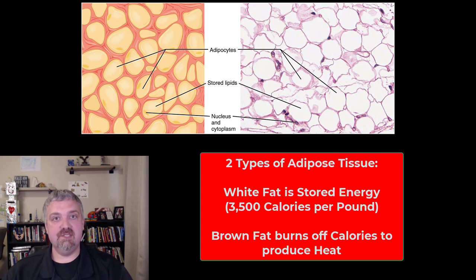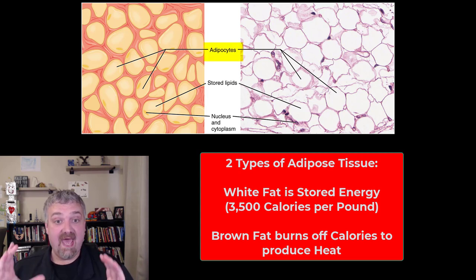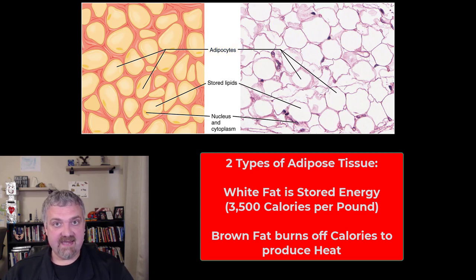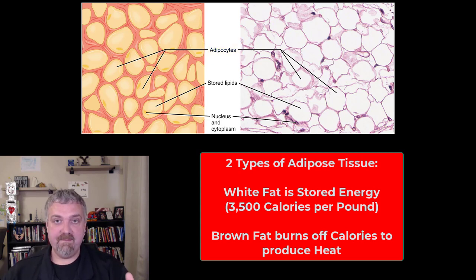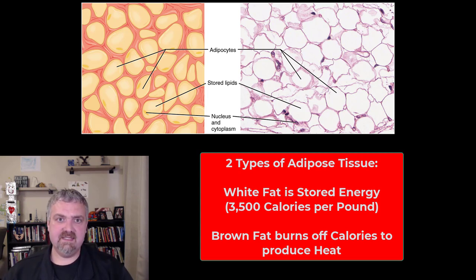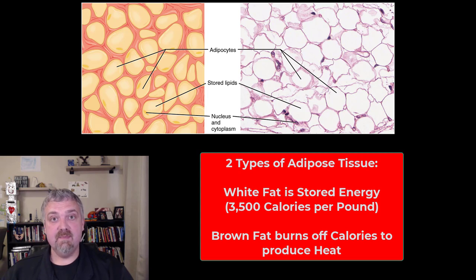Here we see adipose tissue, or fat tissue. Adipocytes are your fat cells, but there are two types of fat. When we think of fat, we think of white fat. White fat is stored energy — you can store about 3,500 calories in a pound of fat.